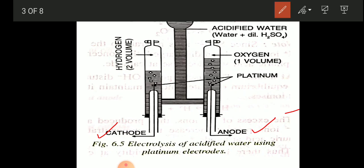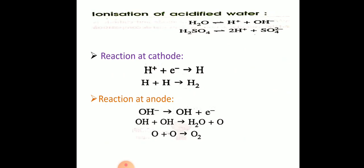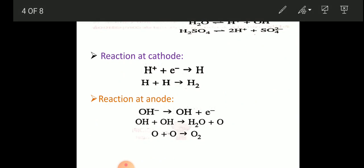The ionization of acidified water: water ionizes as H⁺ and OH⁻ ions, and sulfuric acid ionizes as H⁺ and SO₄²⁻ ions. We have one positive ion, H⁺, and two negative ions: OH⁻ and SO₄²⁻. Since there is only one type of positive ion, H⁺ goes to the cathode, gains an electron, forms a neutral hydrogen atom, and two hydrogen atoms combine to form hydrogen gas.